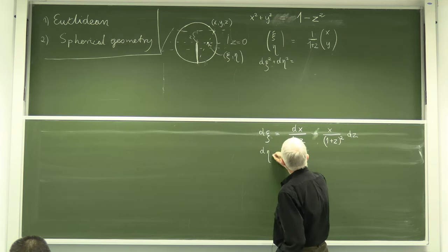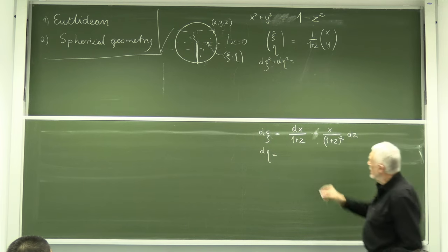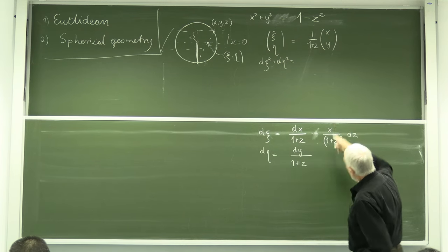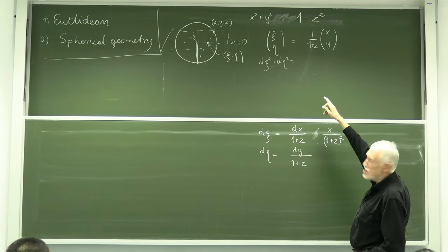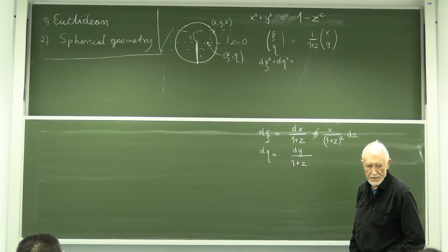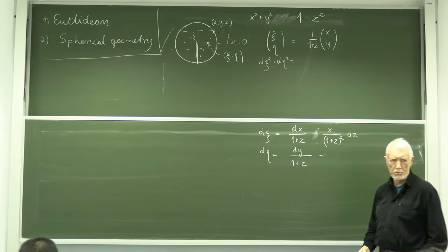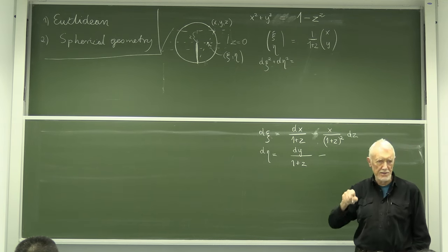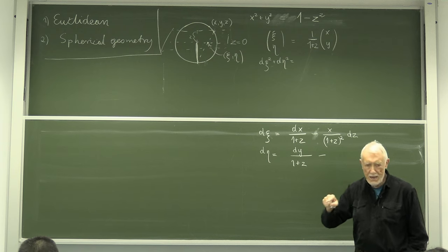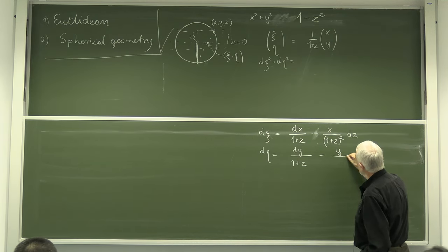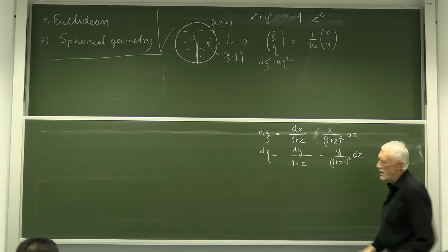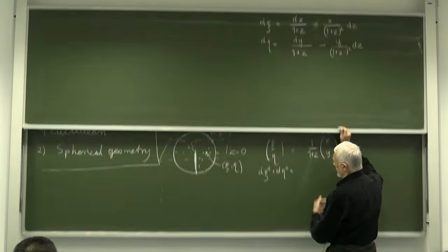In a similar way, dη = dy/(1+z) + y · d(1/(1+z)), which gives dη = dy/(1+z) − y·dz/(1+z)². We differentiate 1/(1+z) to get −dz/(1+z)². Now we are ready to calculate the distance.